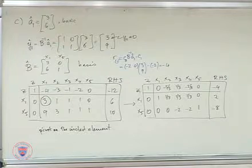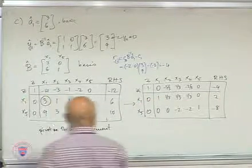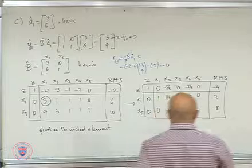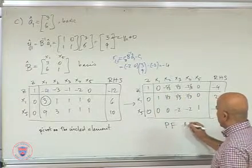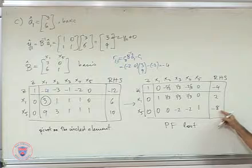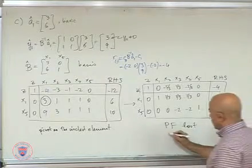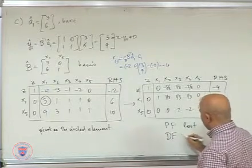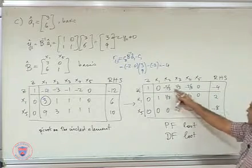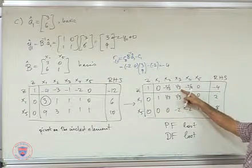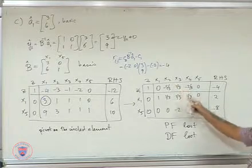At this point, we see that primal feasibility is lost because we have minus 8 here. We also have dual feasibility lost because we have a plus entry in the X3 column.